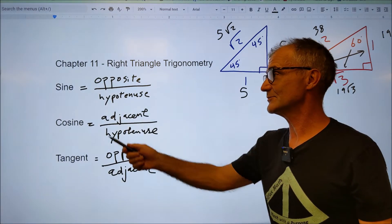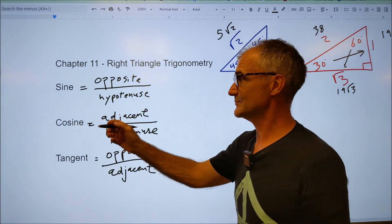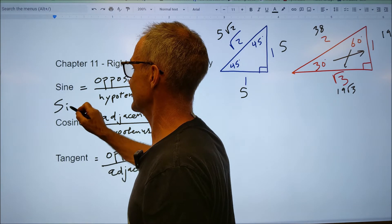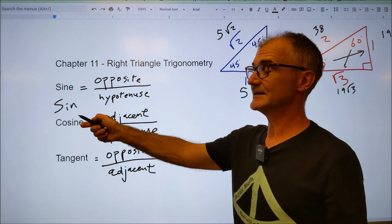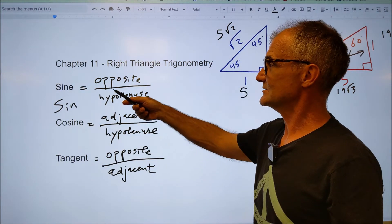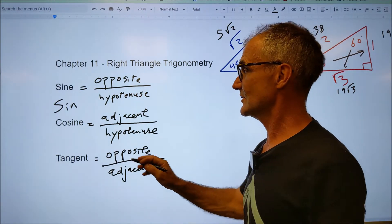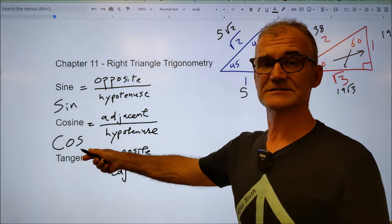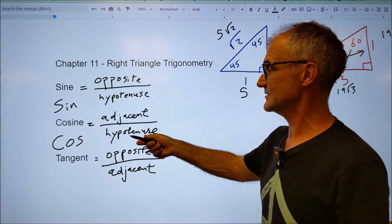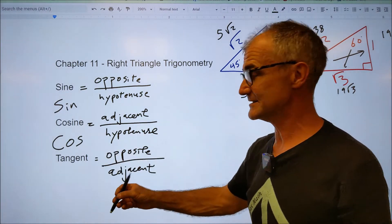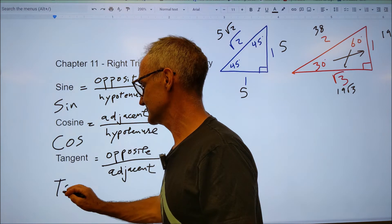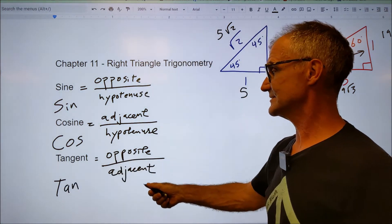With all that said, now let's take a look at these three Greek words. Sine, sometimes abbreviated S-I-N, but still pronounced sine, is a ratio of the opposite over hypotenuse, so it's just a ratio of two sides. Cosine, abbreviated C-O-S, is a ratio of the adjacent over the hypotenuse, and tangent, abbreviated tan, is a ratio of the opposite over the adjacent.